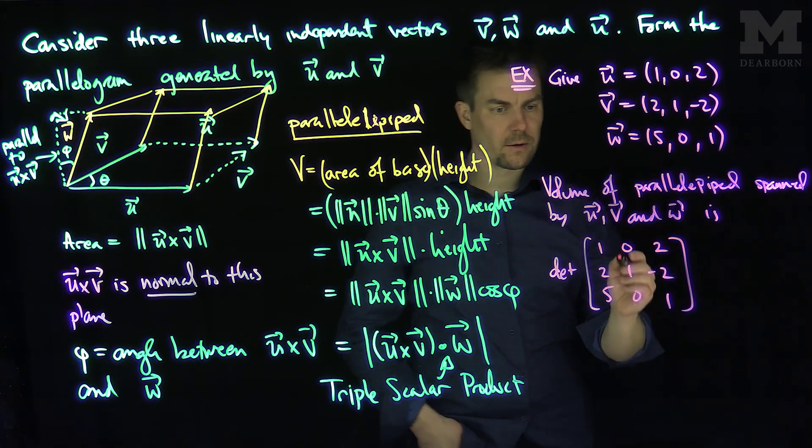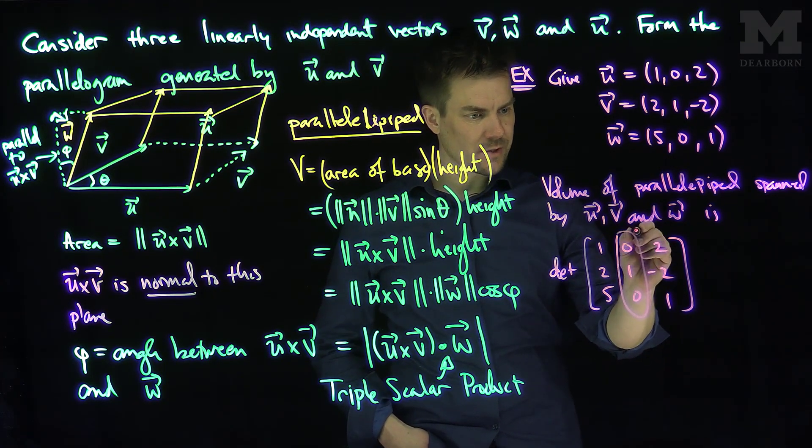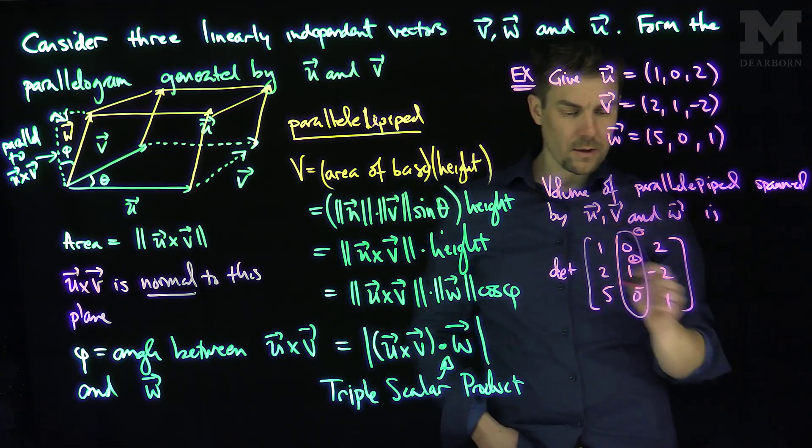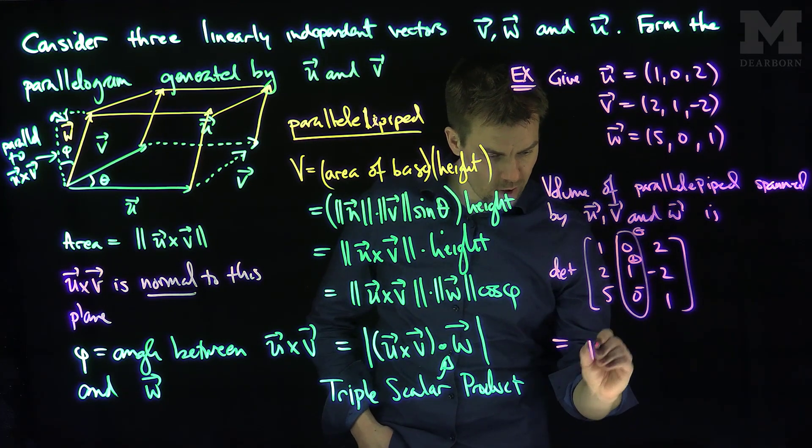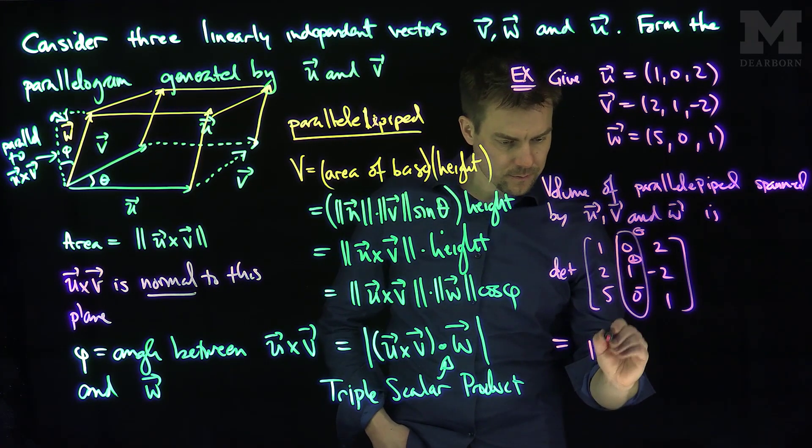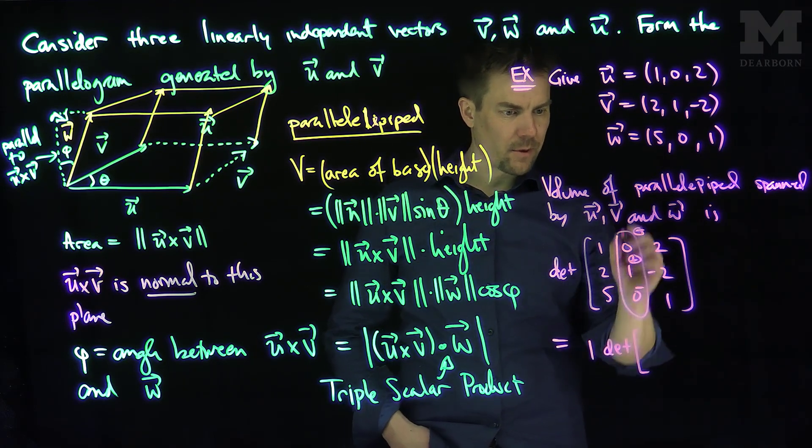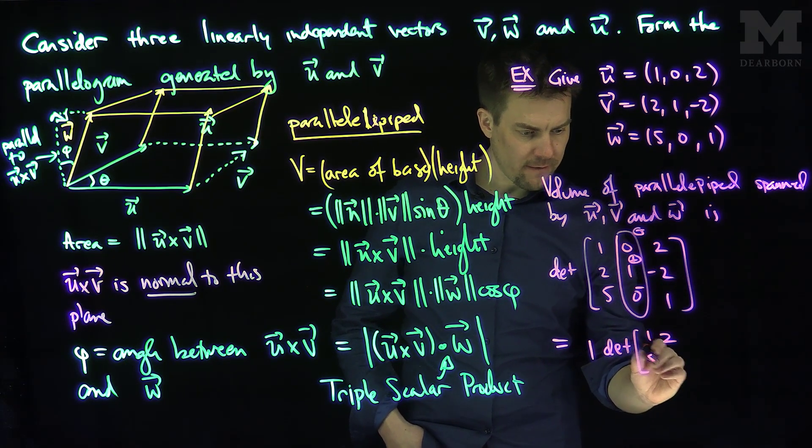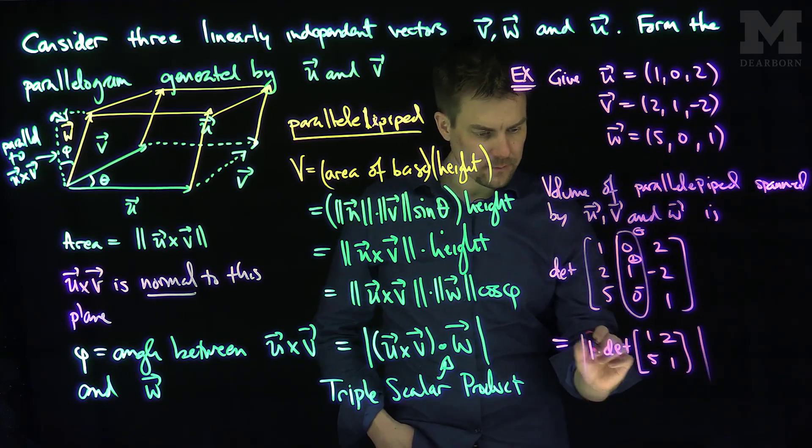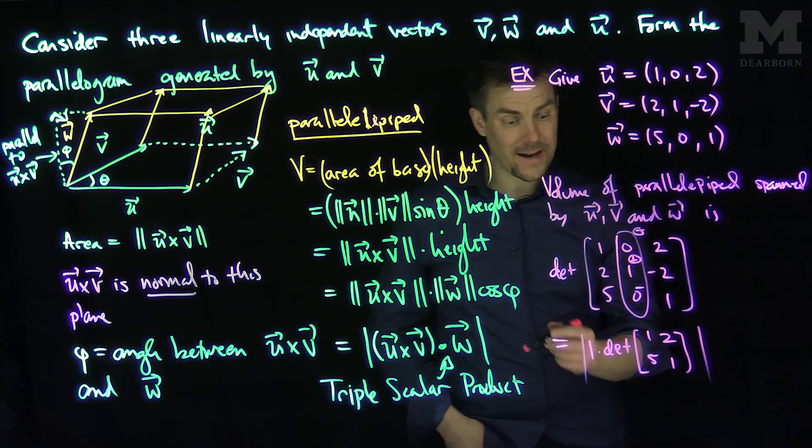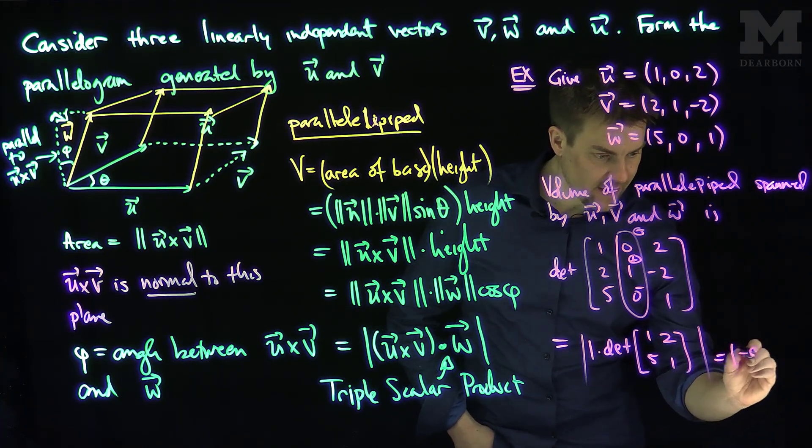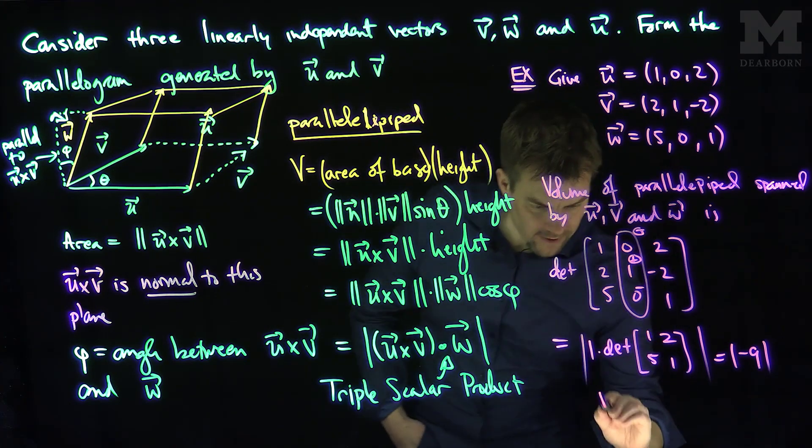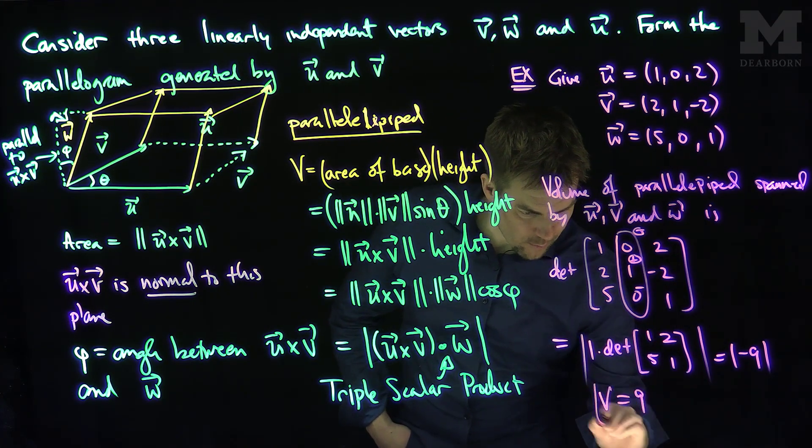And what we can do is expand along the second column, because there's a lot of zeros there. So if we expand along the second column, what I'll get is plus 1 times the determinant of what I get when I punch out the row and column which 1 resides. So I'll get 1, 2, 5, and 1. Put absolute value around everything. So I'm going to have 1 minus 10, so this will be the absolute value of negative 9. We can see that the order actually matters here, because I have a negative 9. We want to make sure this is actually a volume, so the volume of this parallelepiped is going to be equal to 9.